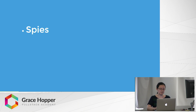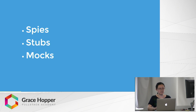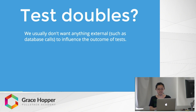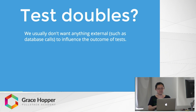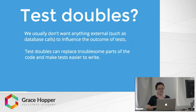So what exactly are spies, stubs, and mocks? They're all types of what we call test doubles. We usually don't want anything external, like database calls, to influence the outcome of our tests. Just like how stunt doubles do the dangerous work in movies, we use test doubles to replace troublesome parts of the code and make our unit tests easier to write.